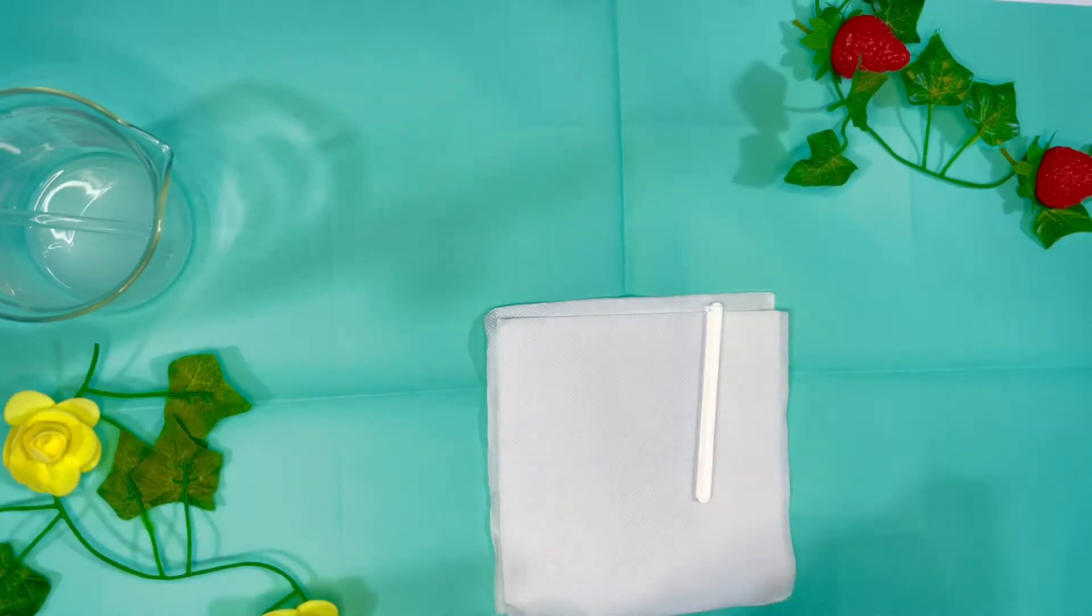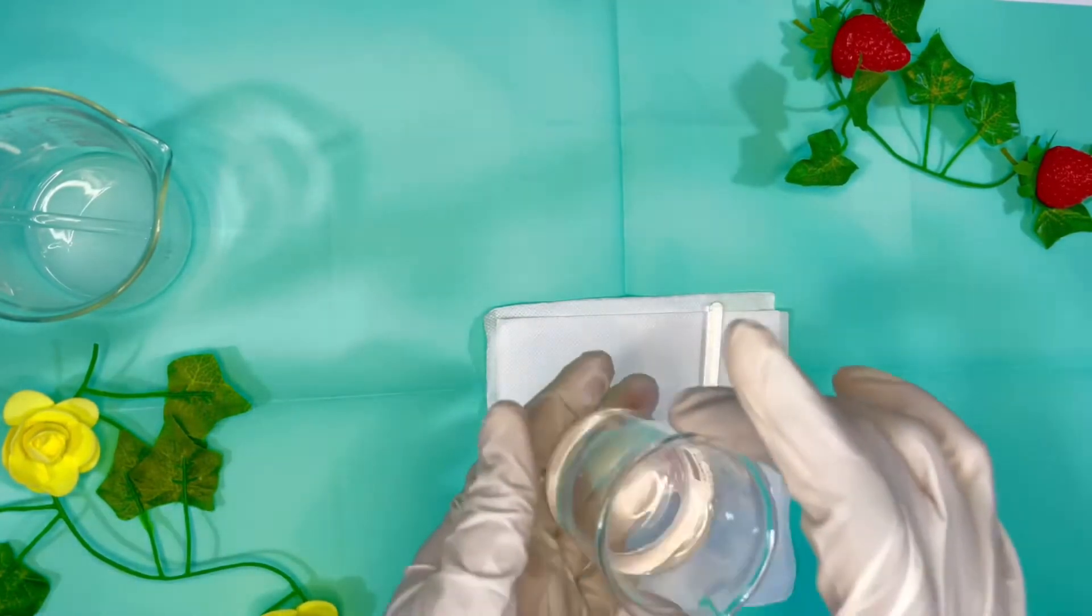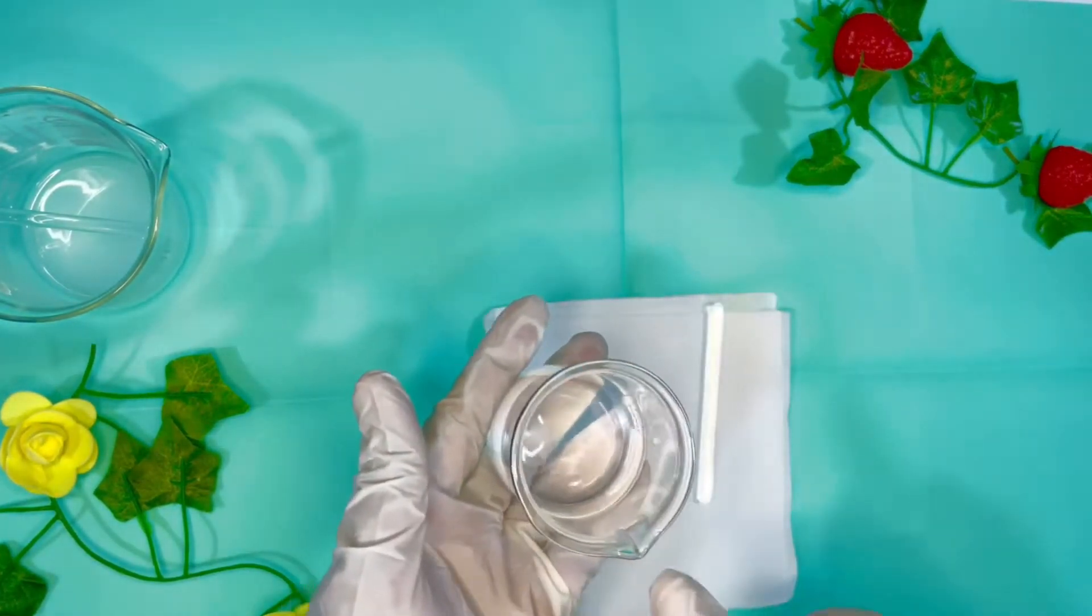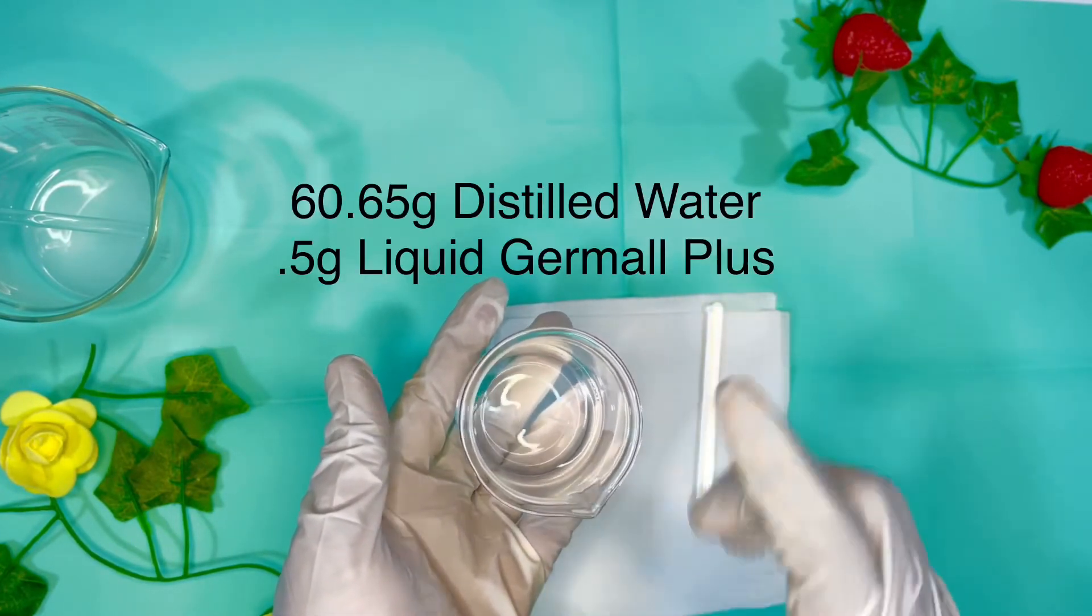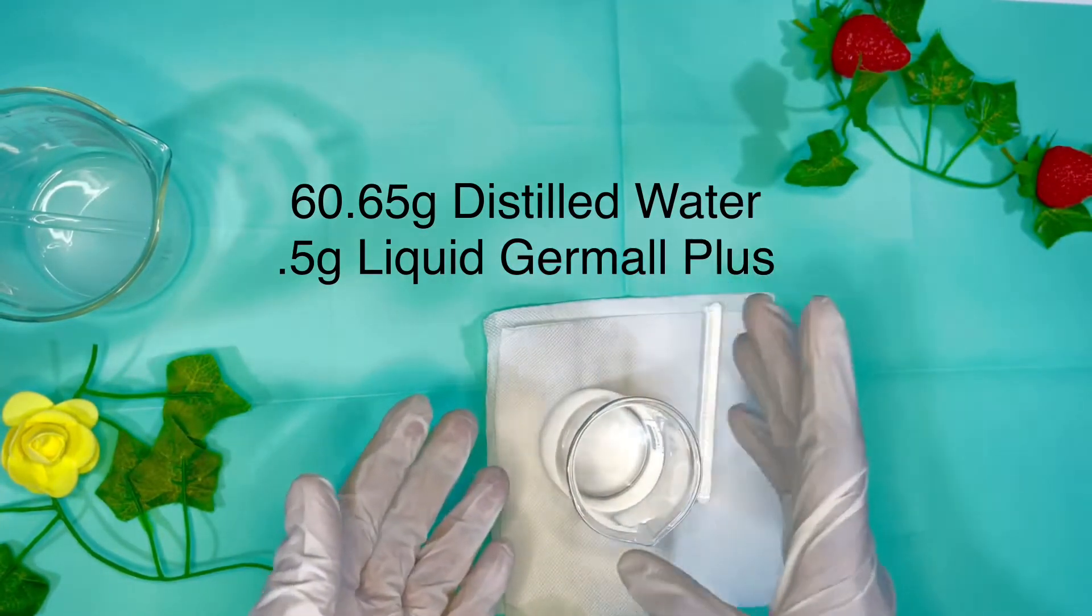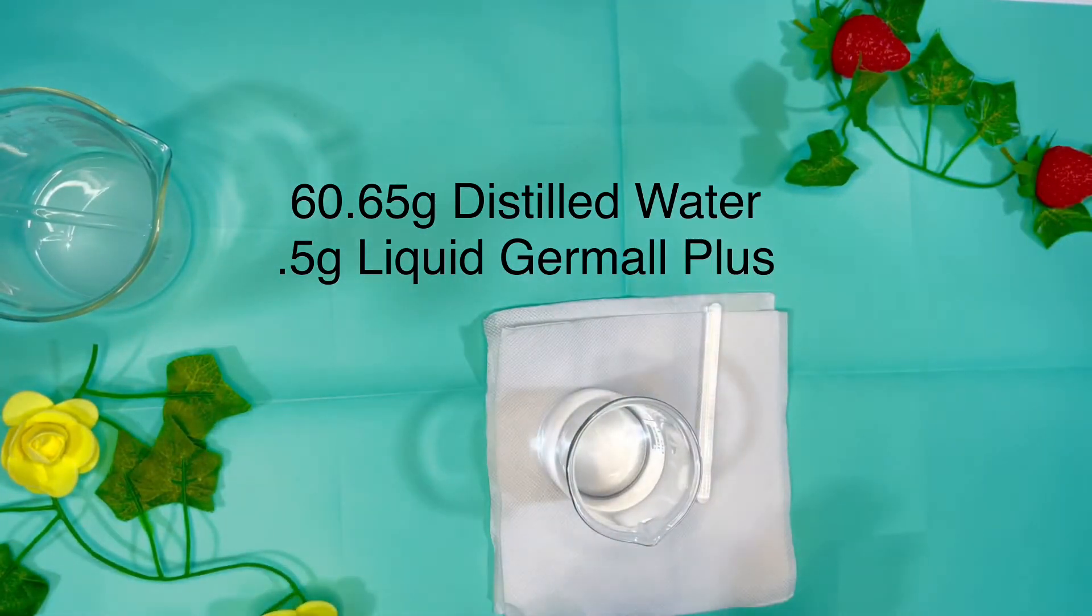And then work on our Phase B. For our Phase B, we have distilled water in here. I have distilled water which is 60.65%, that is 60.60 grams. And then I also have my Liquid Germall Plus in there, which is 0.5 grams.